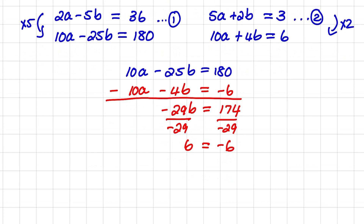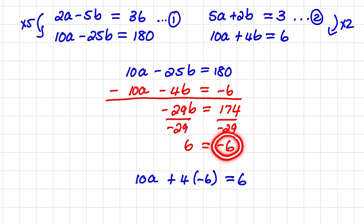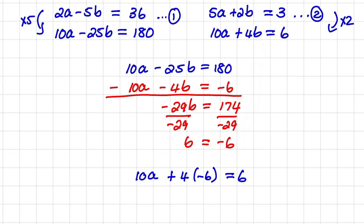Now that I have b, I can substitute it into one of my equations to find a. Using the second equation: 10a + 4(−6) = 6. Simplifying gives 10a = 30, therefore a = 3.